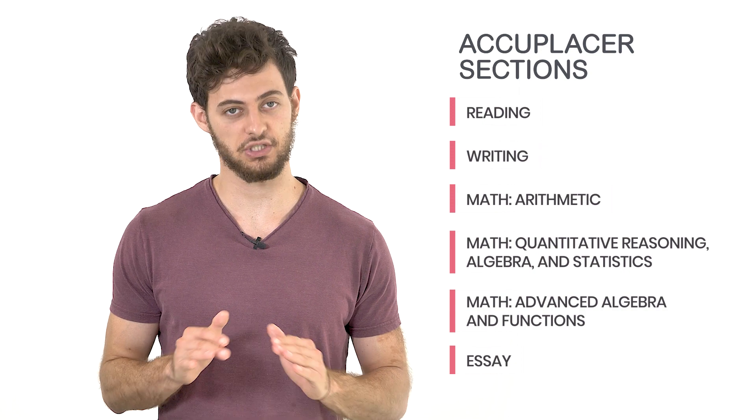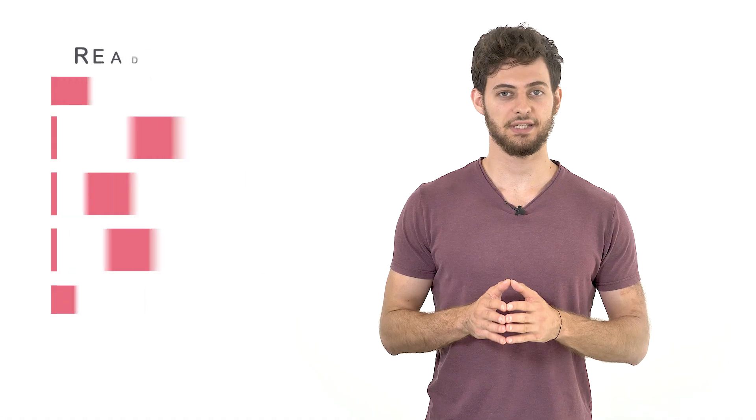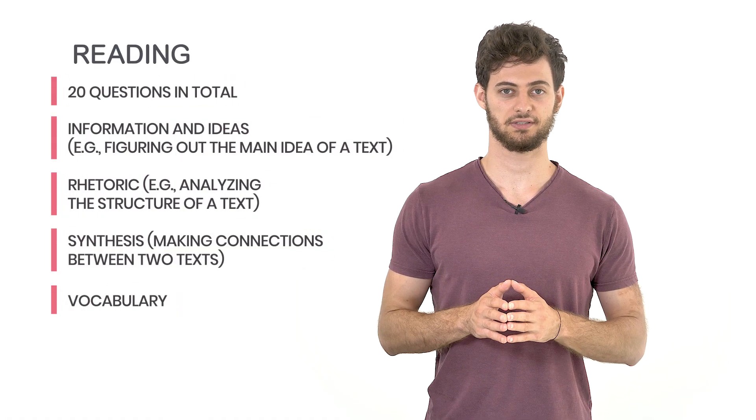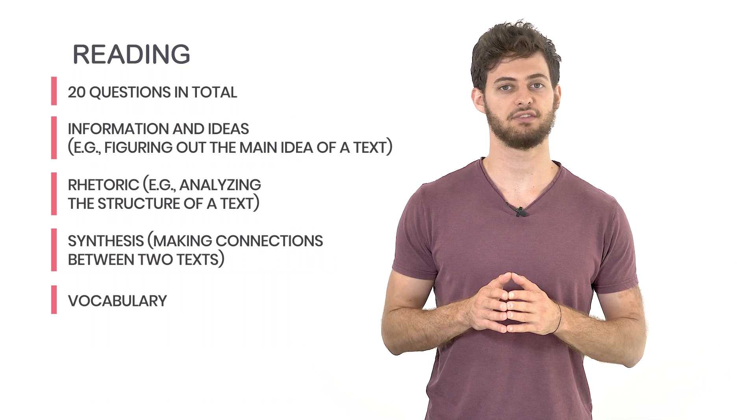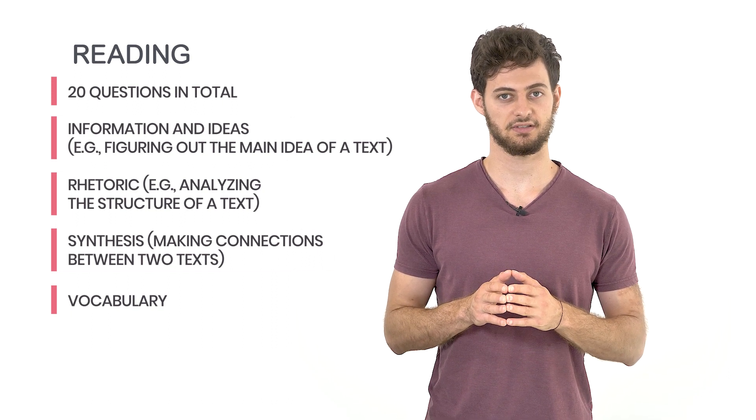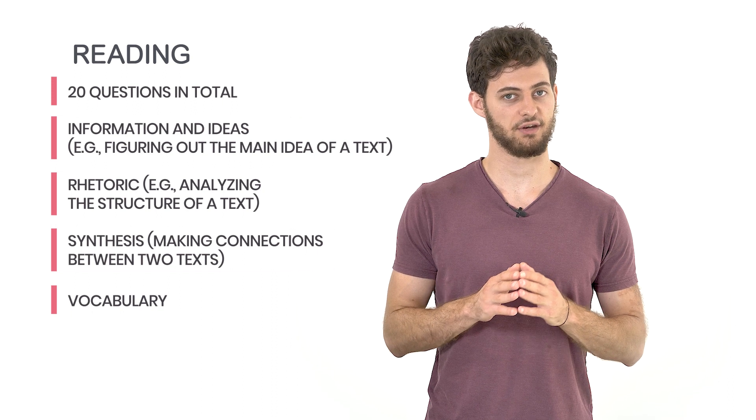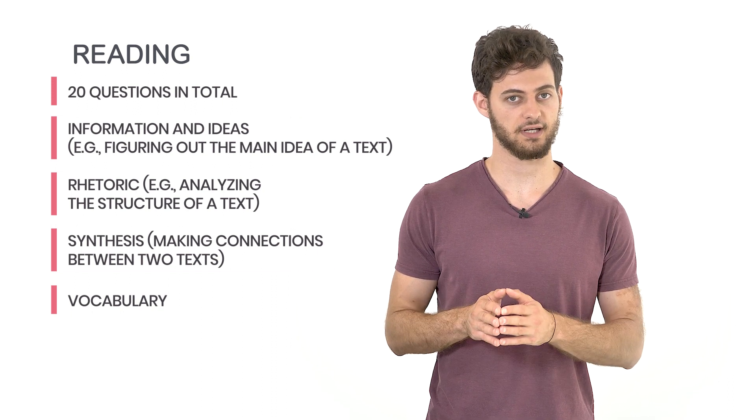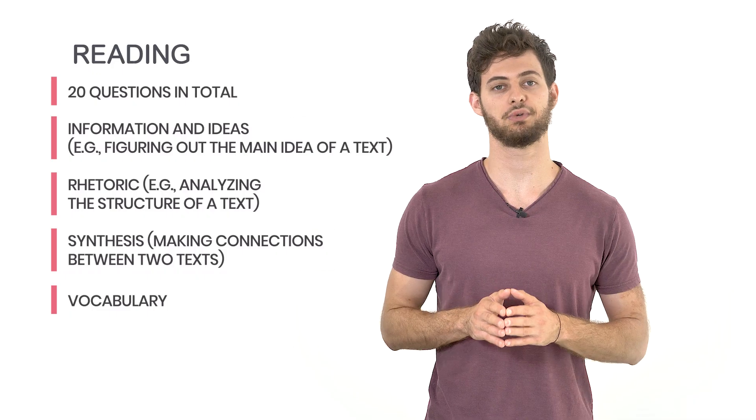Let's dive into each of the Accuplacer sections. The reading section consists of 20 questions and tests your ability to comprehend various types of texts. This section tests you in four main areas: information and ideas, rhetoric, synthesis, and vocabulary.